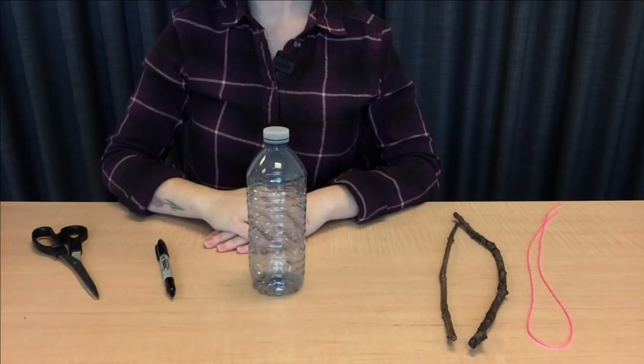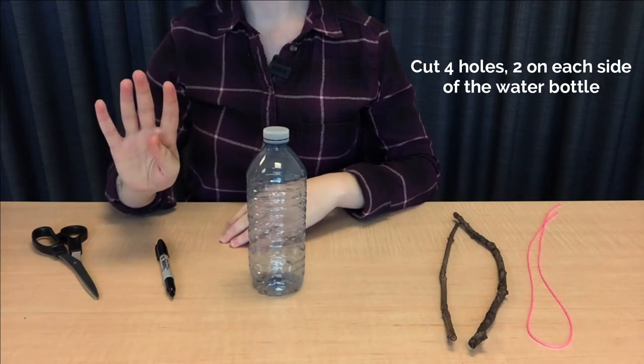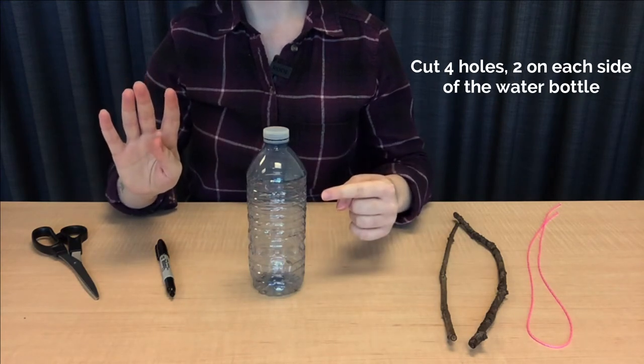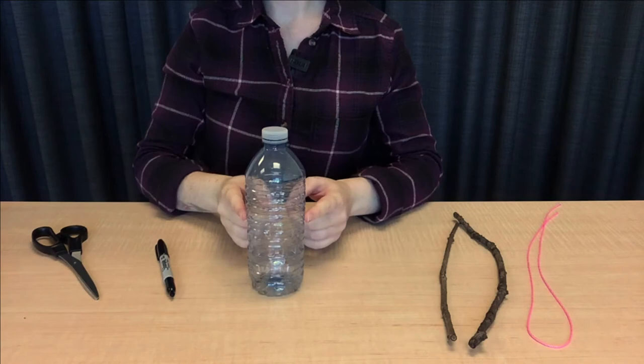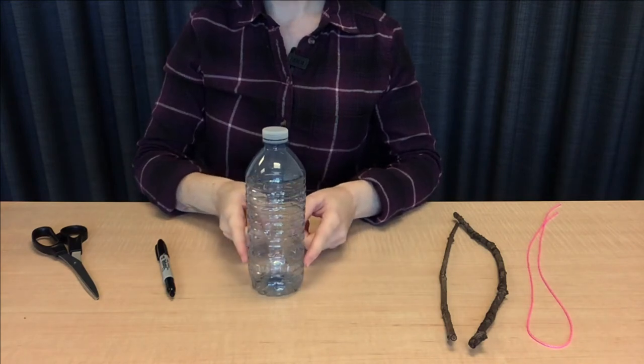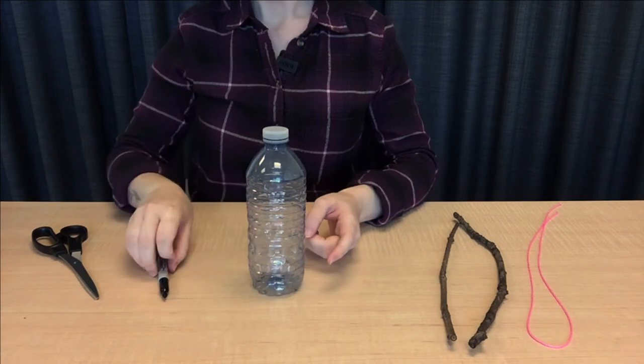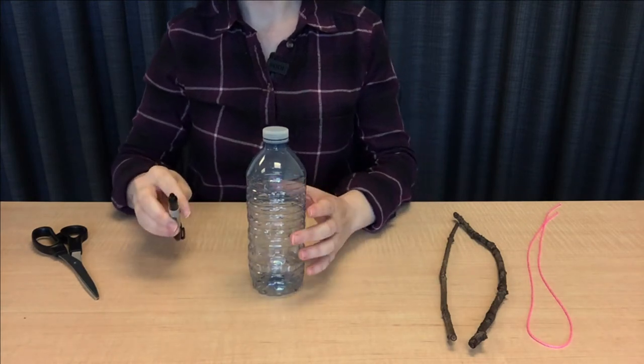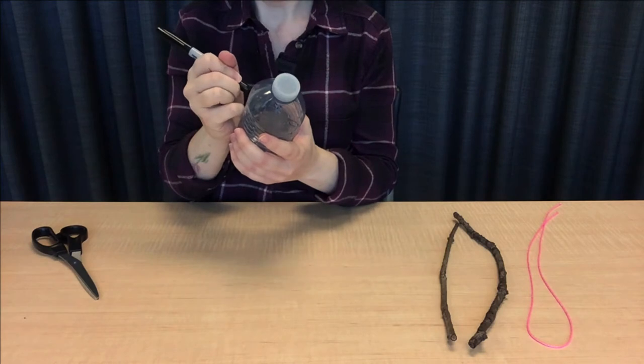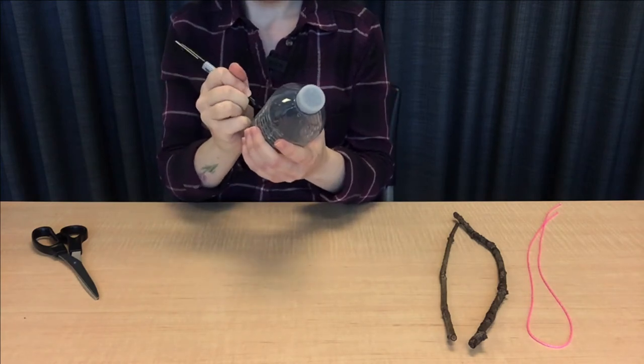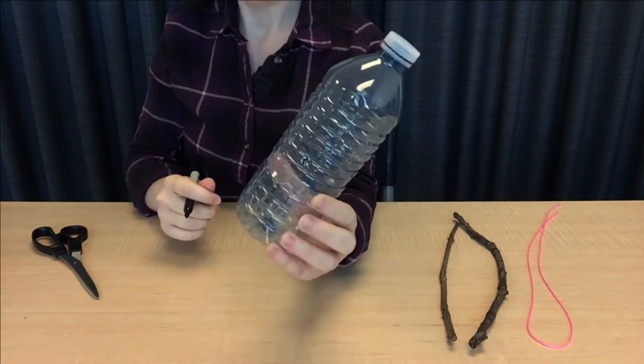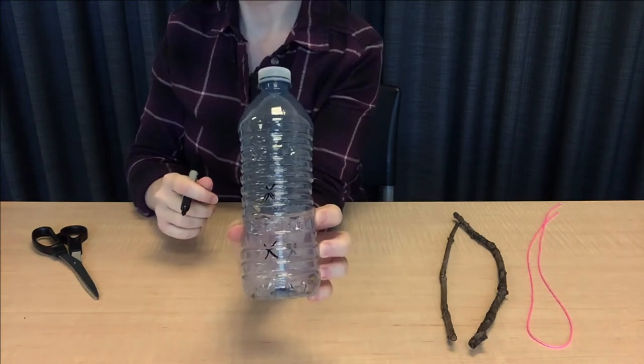The first thing we're going to do is put four holes into our water bottle. We'll put two around the middle and another two opposite each other closer to the bottom. We'll use a sharpie to help mark where these are going to be.